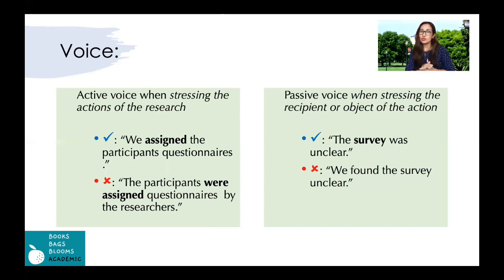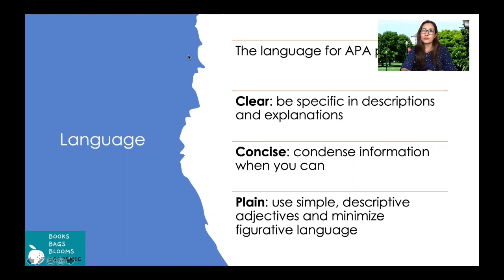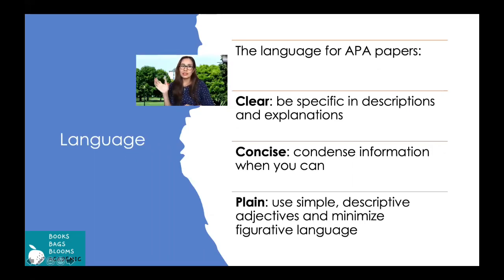Active voice is used when stressing the actions of research — for example, 'we assigned the participants questionnaires or a survey.' Passive voice is used for the participants, subjects, recipients, or objects of action — for example, 'the questionnaire was unclear about the language.' The language for APA papers needs to be clear, meaning specific in descriptions and explanations.